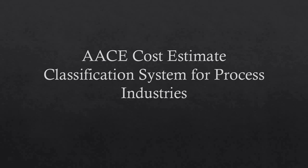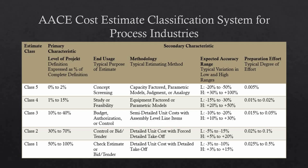AACE, or the Association for the Advancement of Cost Engineering, provides a cost estimate classification system to standardize and improve cost estimation practices. AACE classifies cost estimates into five maturity levels from Class 5 to Class 1. End usage, methodology, expected accuracy range, and preparation effort are secondary characteristics that are generally correlated with the level of project definition. As the class number decreases, project definition increases and estimates become more refined.